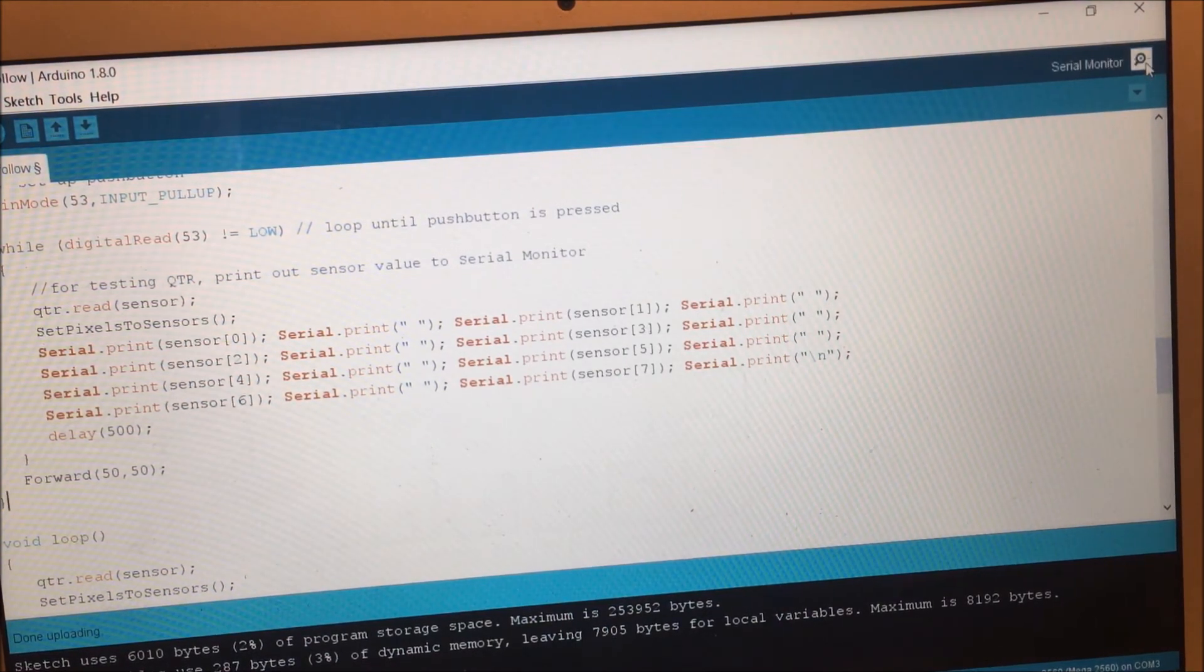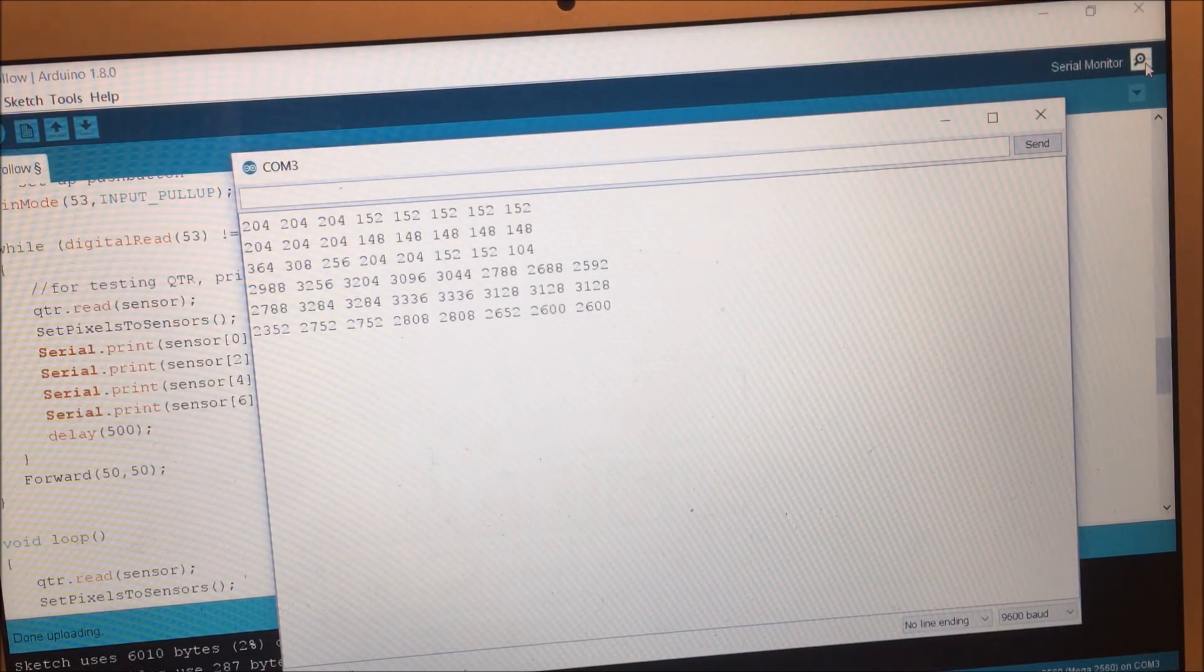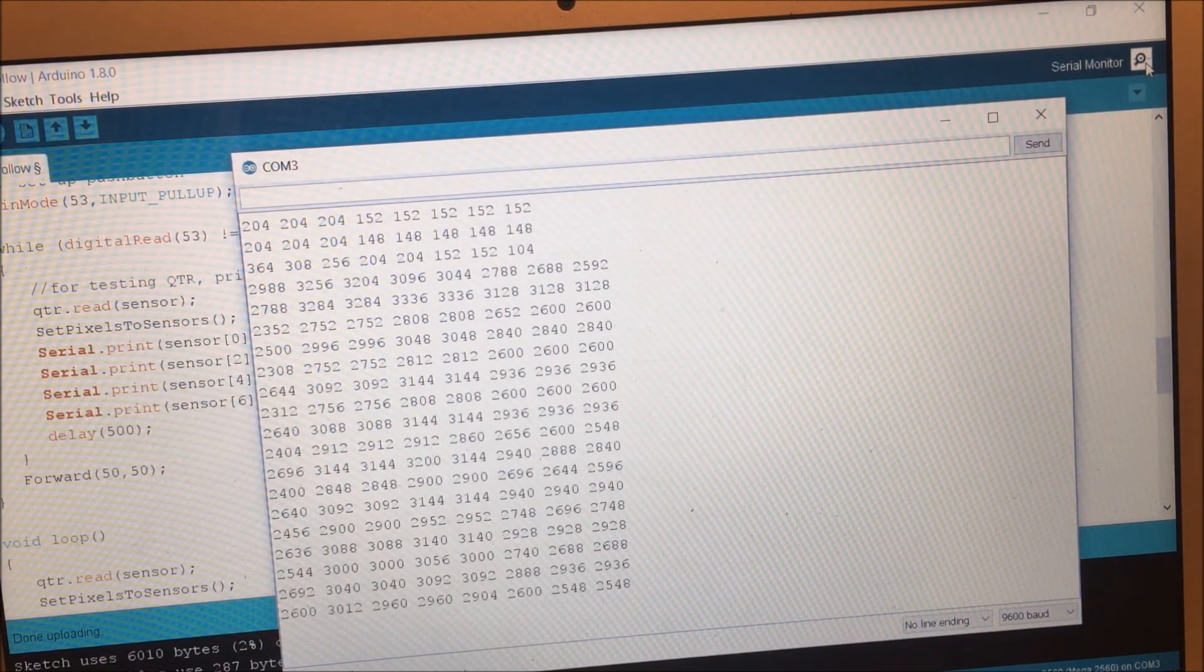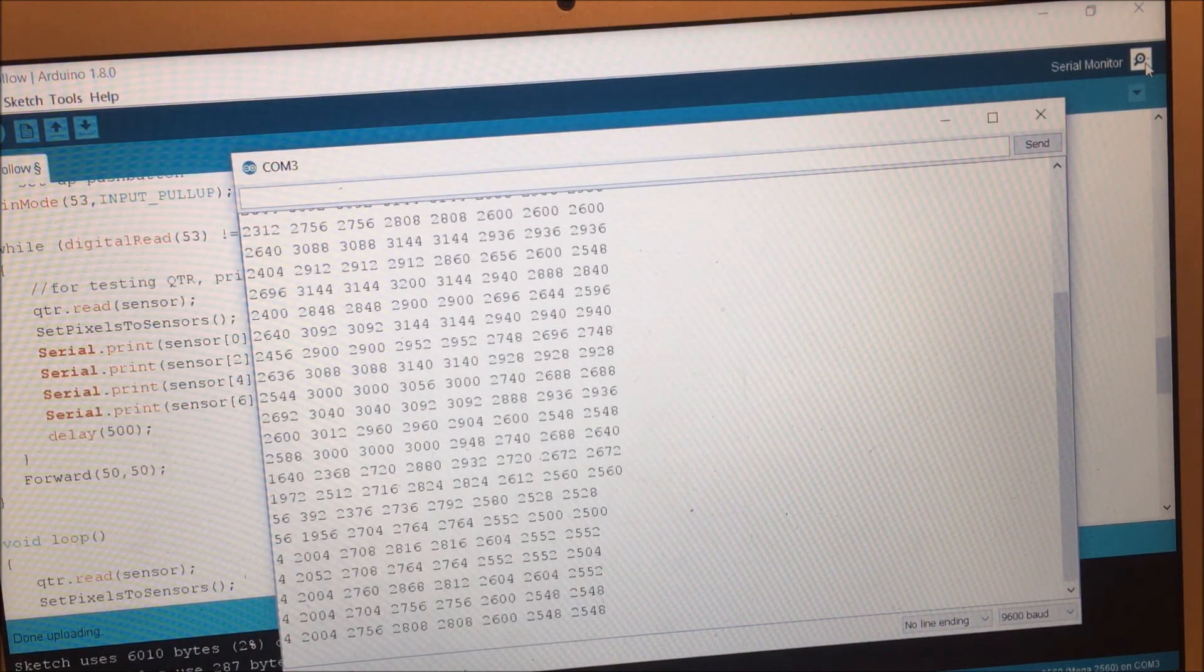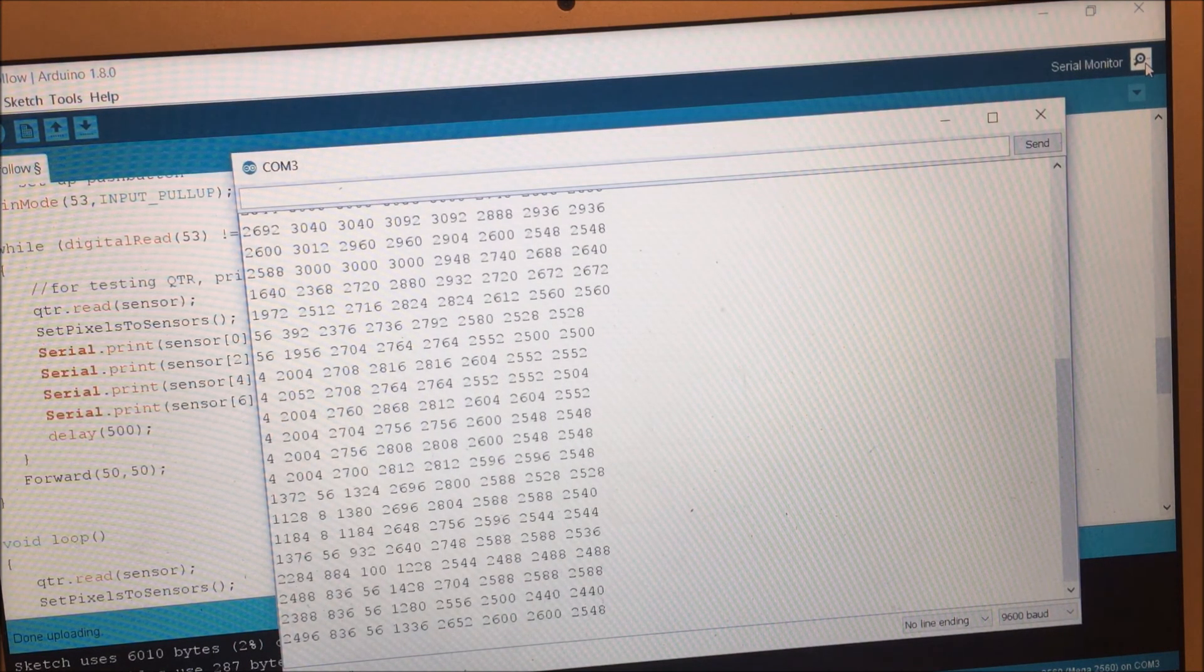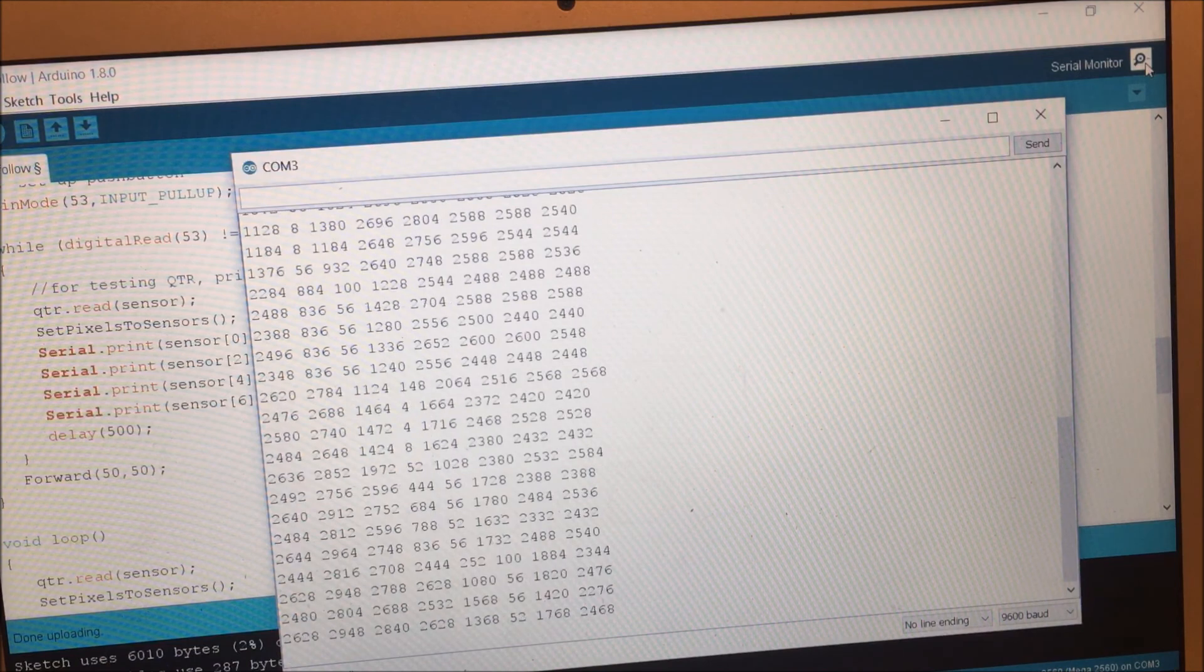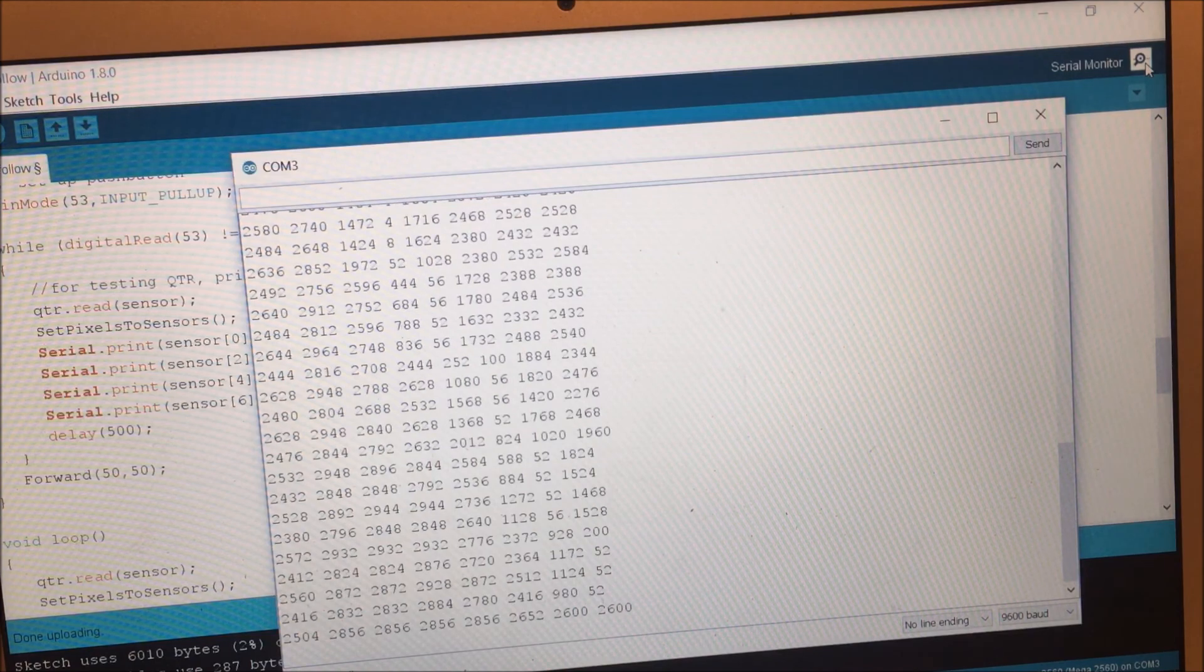Then, after you run the code that I've supplied, you can start the serial monitor. You'll be in the while loop. And notice the values that are coming from the eight sensors. And notice that they're very large numbers. What I do is I hold my finger under each sensor and just to test it, notice it goes to a low number. Now I'm holding it under the second one, the third one, the fourth one, the fifth one, the sixth one, seventh one, and last one. This lets you see that your QTR sensor is working.